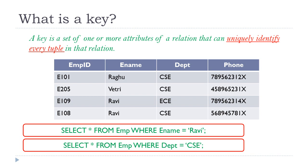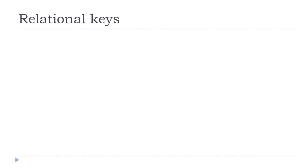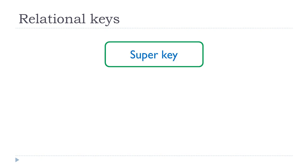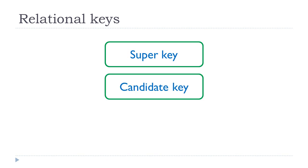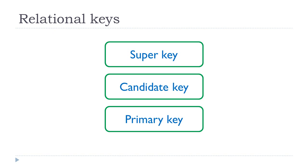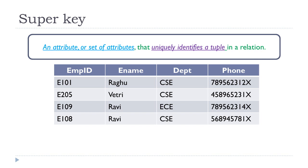Even if one value in a particular column violates this property, that column or attribute cannot be considered as a key. We shall now discuss three different key concepts: super key, candidate key, and primary key. All three uniquely recognize a record in a table. A super key is an attribute or set of attributes that uniquely identifies a tuple in a relation — it can be any attribute or any combination of attributes that can uniquely determine a record.